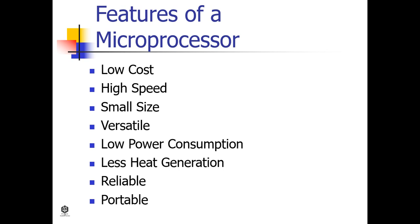Less heat generation: compared to vacuum tube devices, semiconductor devices do not emit as much heat. Reliable: microprocessors are very reliable — the failure rate is very low since semiconductor technology is used. Portable: devices or computer systems made with microprocessors can be made portable due to their small size and low power consumption.